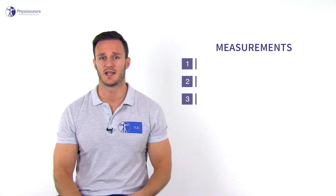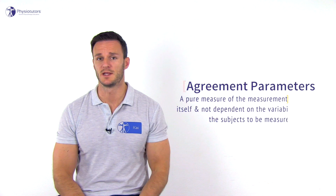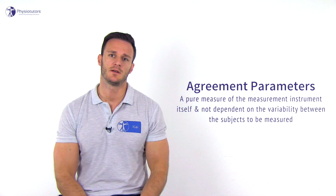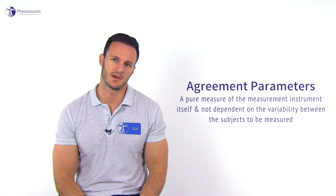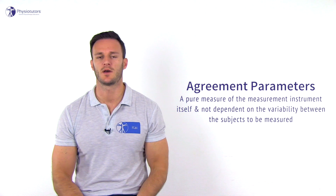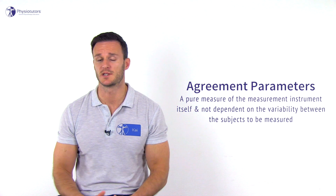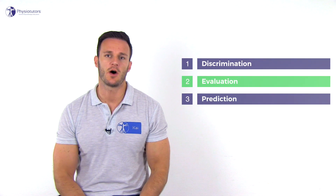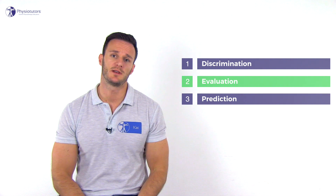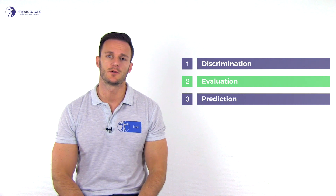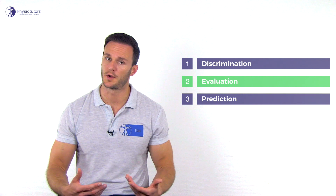Agreement parameters assess how close the results of repeated measurements are by estimating the measurement error in repeated measurements. Agreement parameters are more a pure measure of the measurement instrument itself and not dependent on the variability between the subjects to be measured. In practice, this is often used to evaluate your treatment effect and to judge whether a real change has taken place or not.